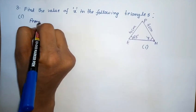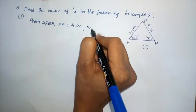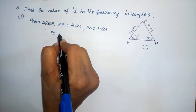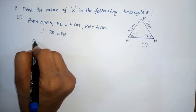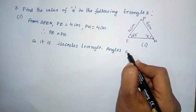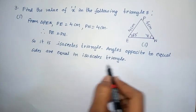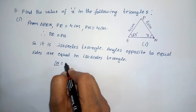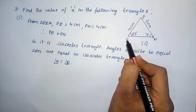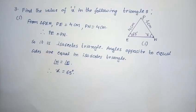From triangle PEN, side PE is given as 4 cm and PN is also equal to 4 cm. Therefore, side PE equals side PN, so it is an isosceles triangle. In an isosceles triangle, angles opposite to equal sides are equal. So angle N equals angle E. Therefore, X equals 65 degrees. This is the solution for the third part, first one.